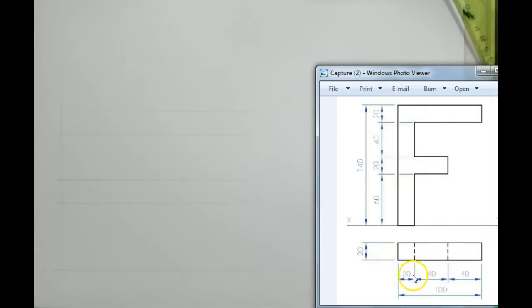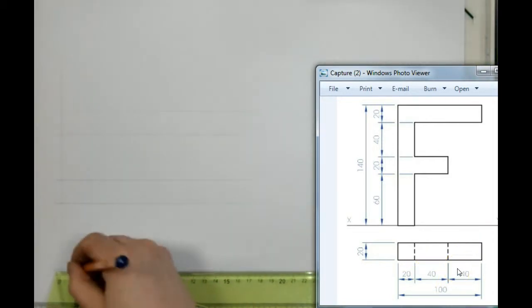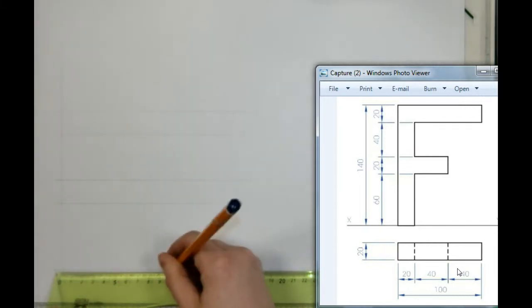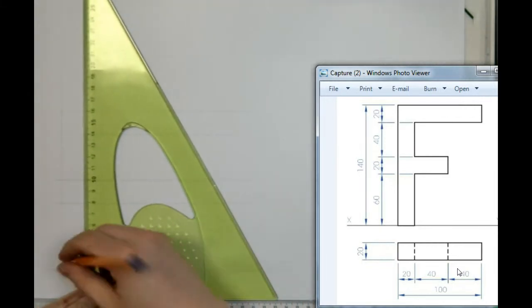Next, we've got our distances, which is 20, 40 and 40. And from each of my points, I'm going to draw a vertical line.